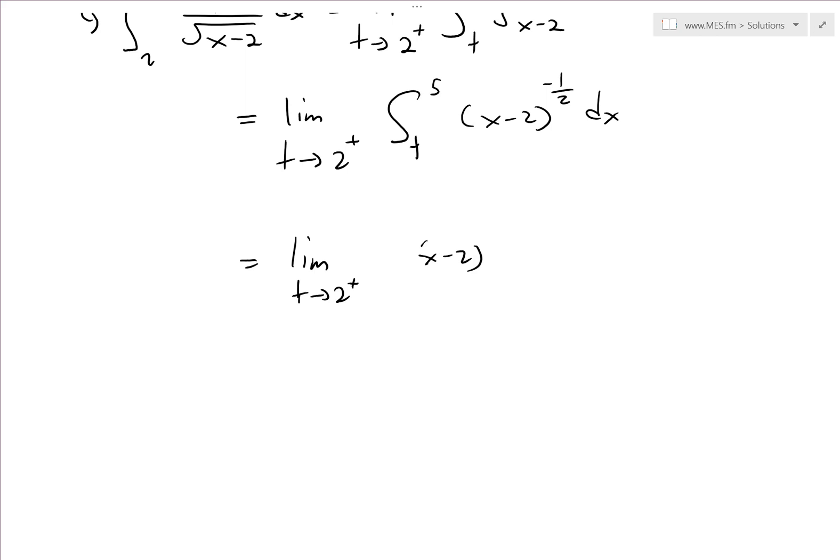When we add 1, that becomes plus 1 over 2—negative 1 over 2 plus 1 is just 2 over 2, which is 1 over 2. We add 1 and then divide by this power.